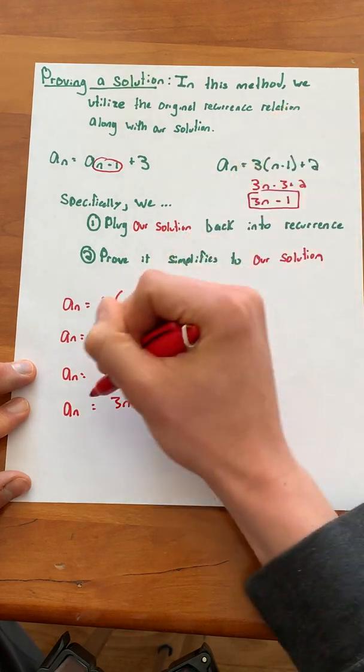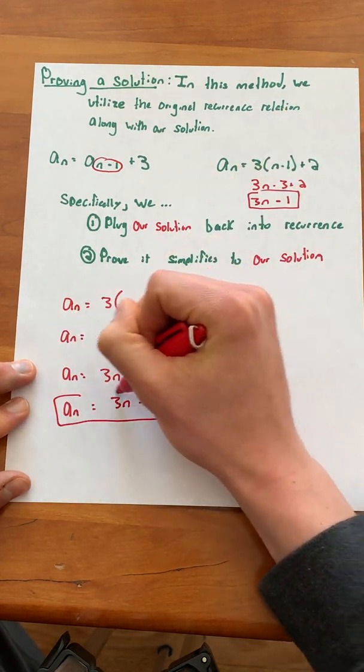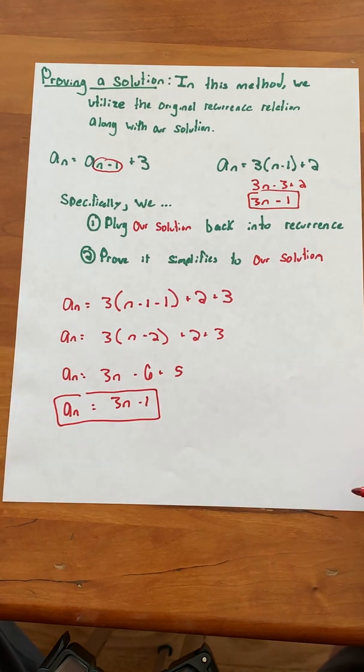In reality they're the same and we have successfully proven that our closed form solution is in fact a closed form solution to the recurrence relation. Recurrence relations can be a little bit tricky, but after you've gone through working through them like this they become fun to work through. Thanks so much for watching and good luck!